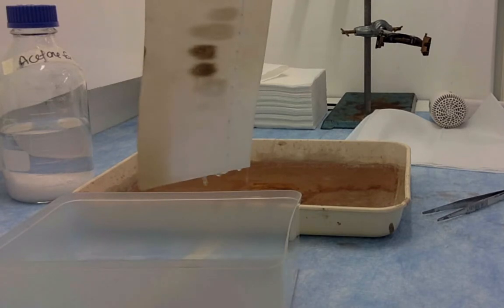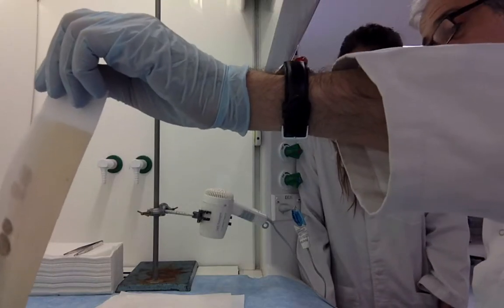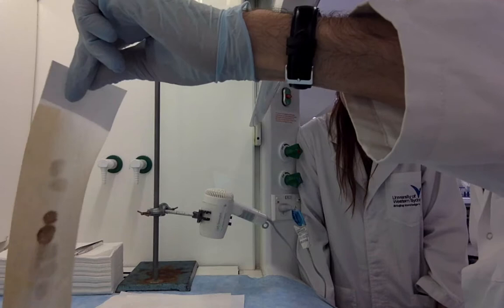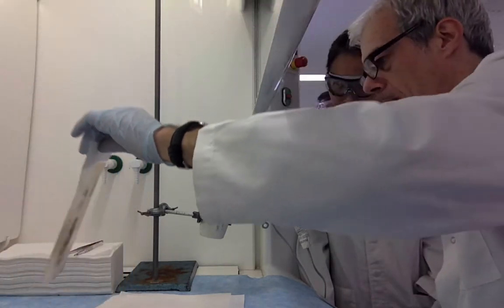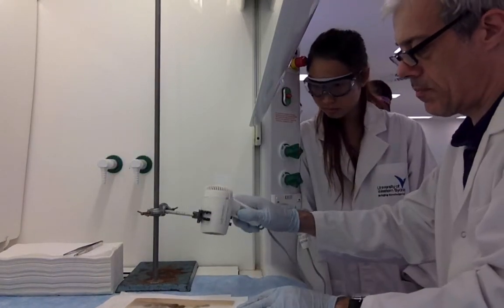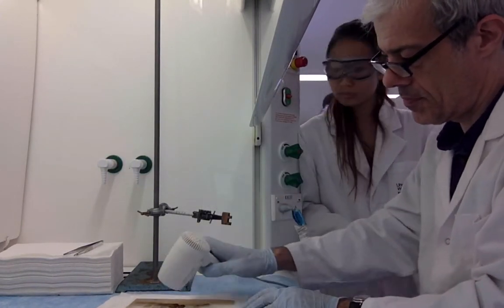There you go. So for each spotted solution, there's typically a spot above there as it's been running up towards the top of the paper. So just need to dry off the solvent again, and then we can start to analyze the data.